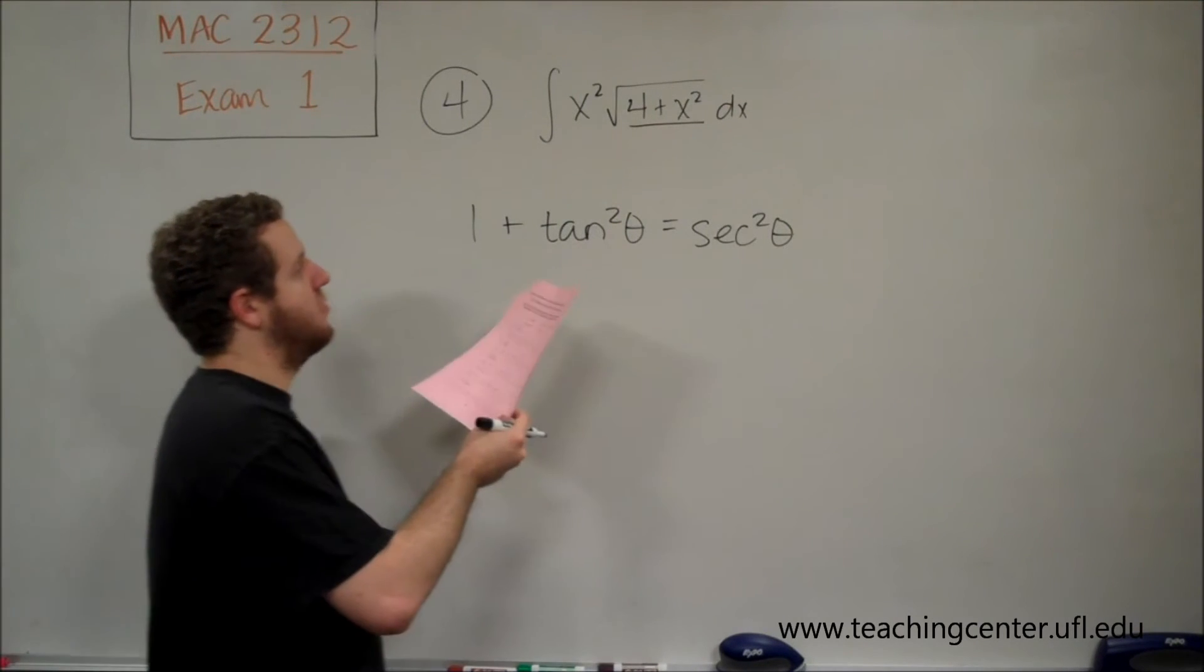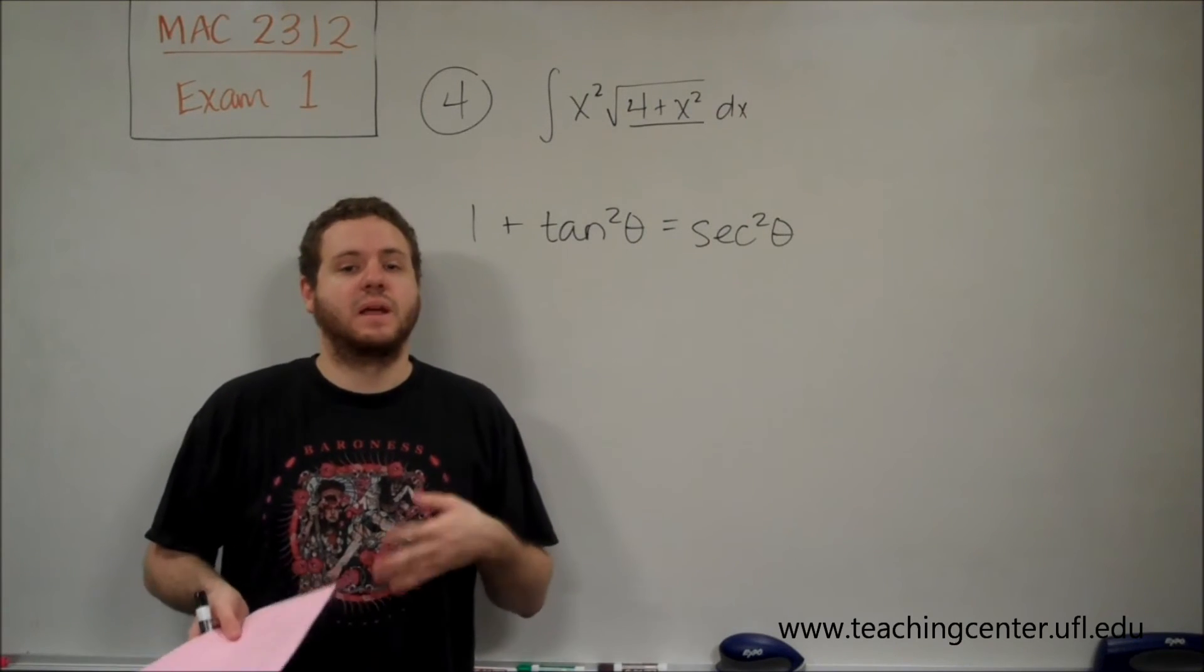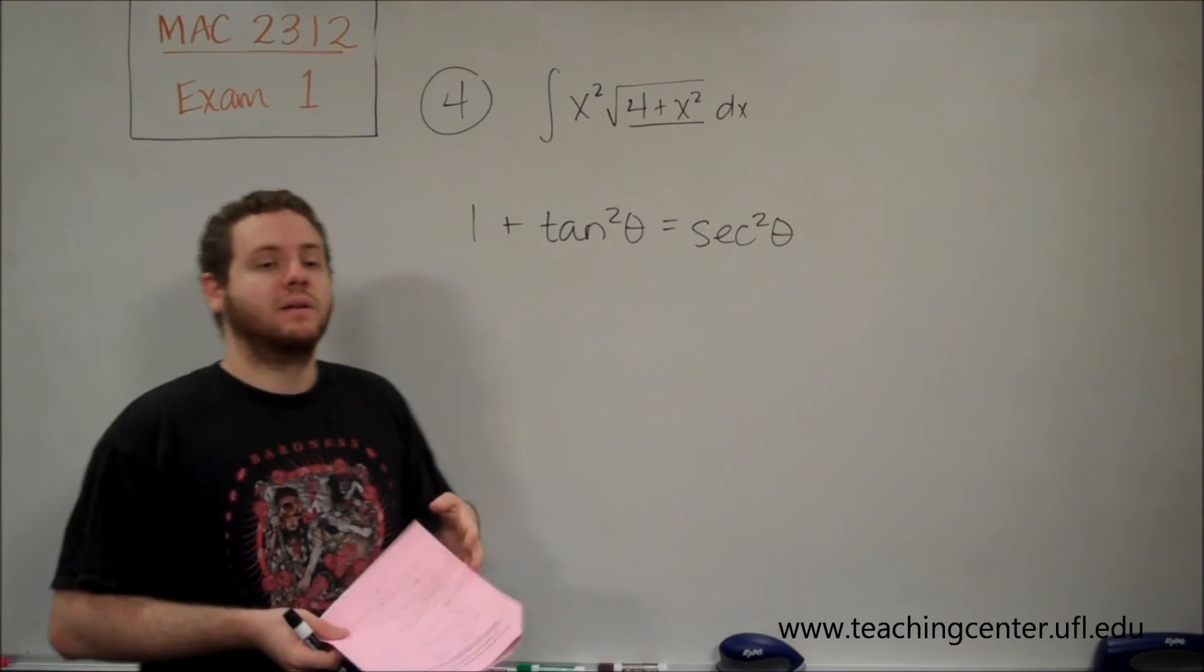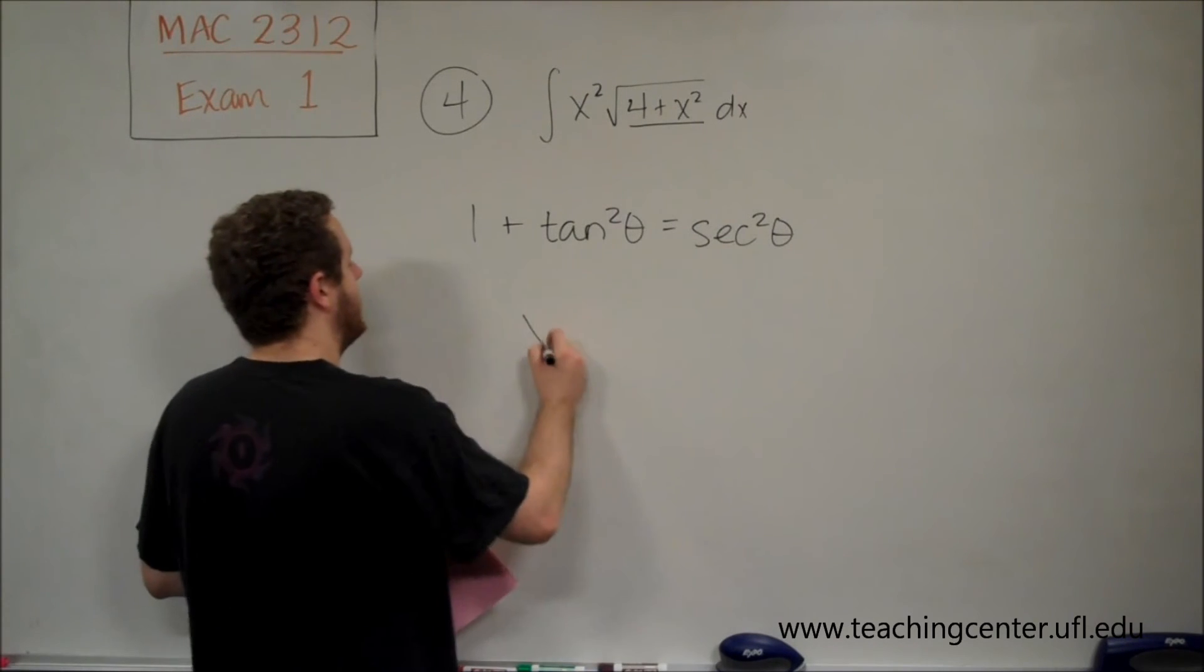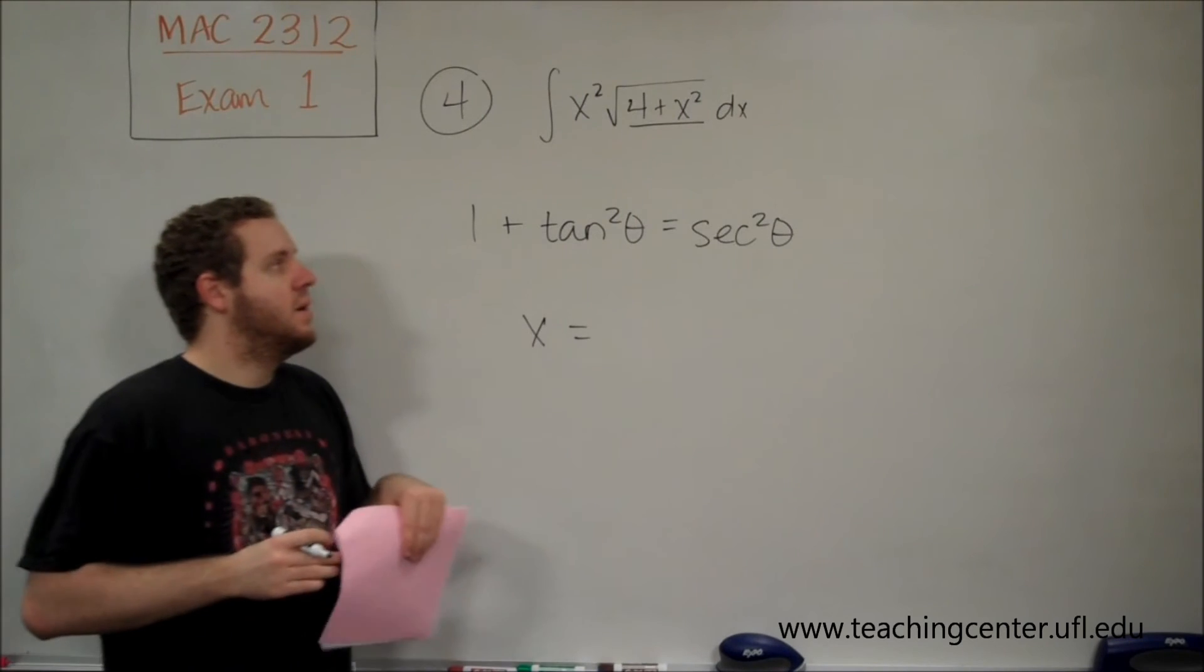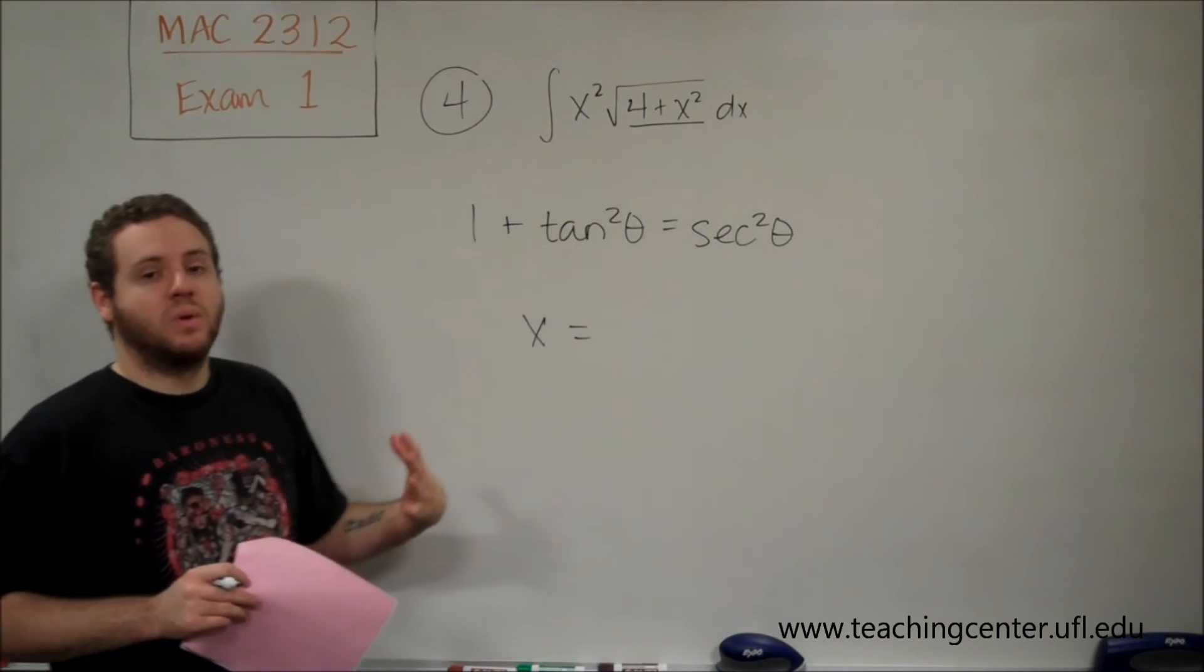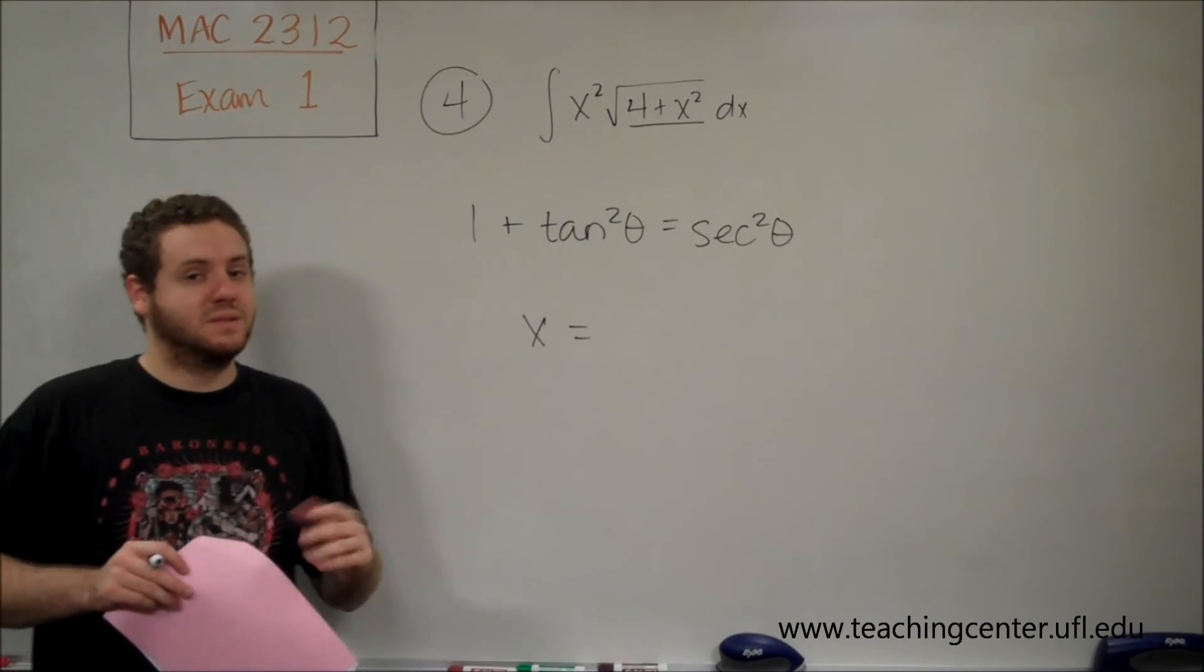But since we have a 4, the coefficients have to match up so that they would cancel out, or factor out, and we would be able to have just the identity. So we need x to be something tan theta, and the coefficient has to be when it's squared equal to 4. That leaves us the number 2.